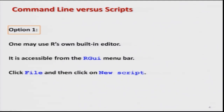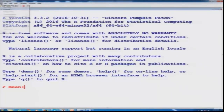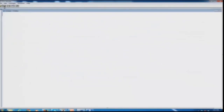In order to write such programs, we have several options. The first option is to use the built-in editor inside R software — that is R's own editor — which is accessible from R's graphical user interface window. You simply go to File and click on New Script. Here you can type whatever you want — say mean, variance — and then save it and execute it later. That is the script editor available inside R software. I have taken a screenshot of the same window here.